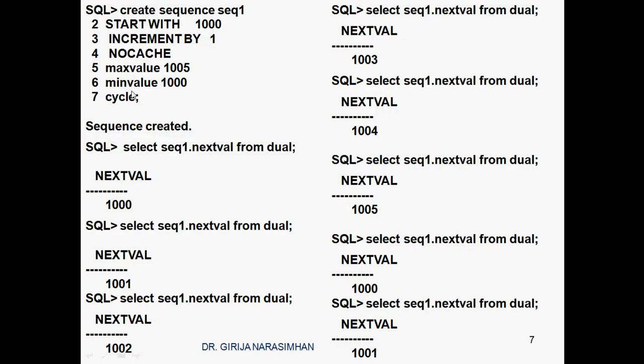This is the use of minimum value in the CREATE SEQUENCE. Once the maximum value is reached, if you give cycle, it will start again with the minimum value. That is what this tutorial is about.